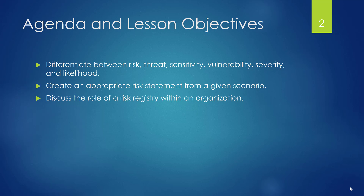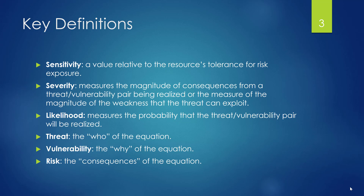Let's get into the meat and potatoes — the core concept — which is building a risk statement. To do so we need to understand a couple of key definitions. We'll start with sensitivity: the value associated with a resource as it relates to the tolerance for risk exposure. We're looking at how sensitive is that tolerance — is this something that's pretty stoic and hardened with not a lot of sensitivity, or is it quite sensitive and that value quite important?